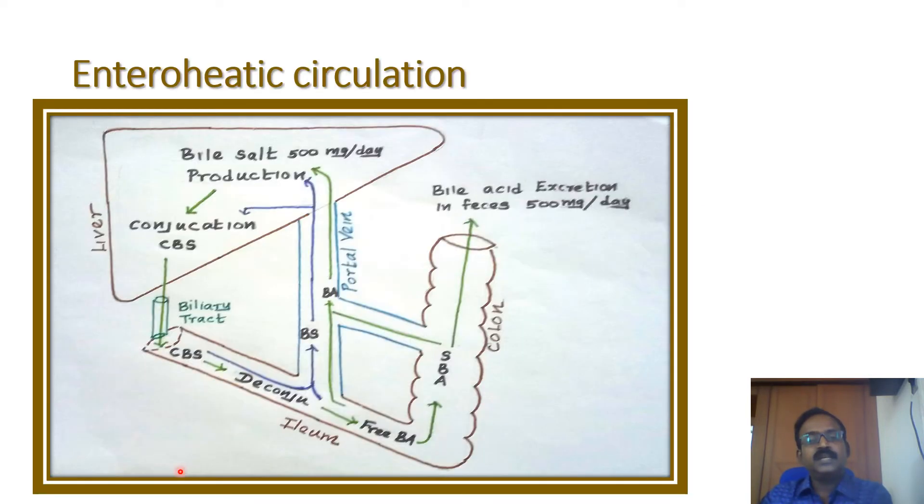This schematic diagram depicts the enterohepatic circulation. This is the liver. The liver secretes bile salts every day, 500 mg per day. The liver conjugates them with taurine and choline.